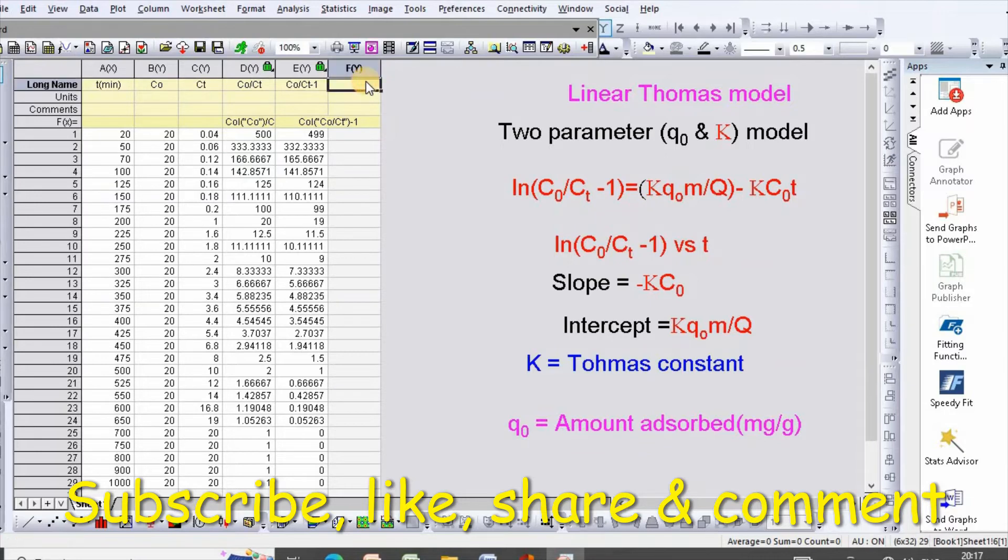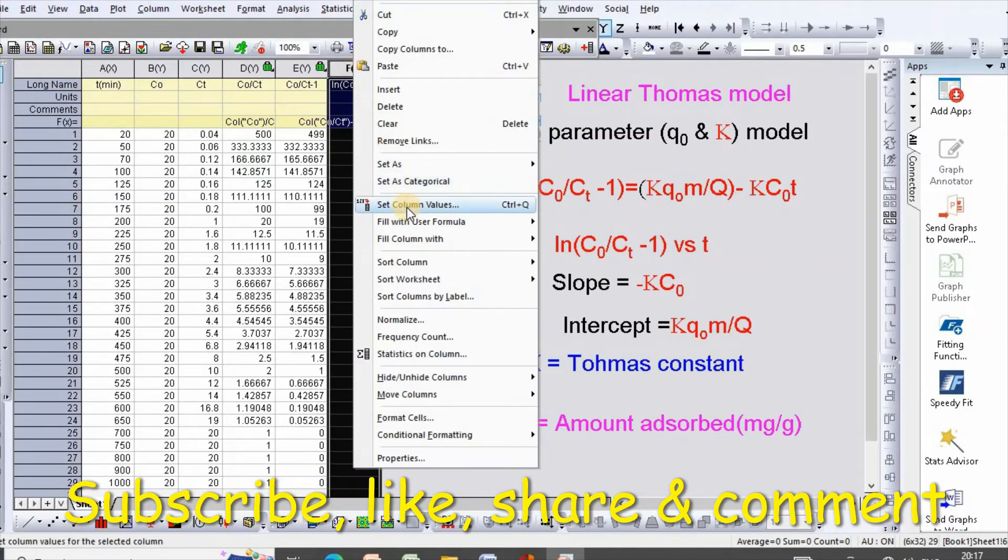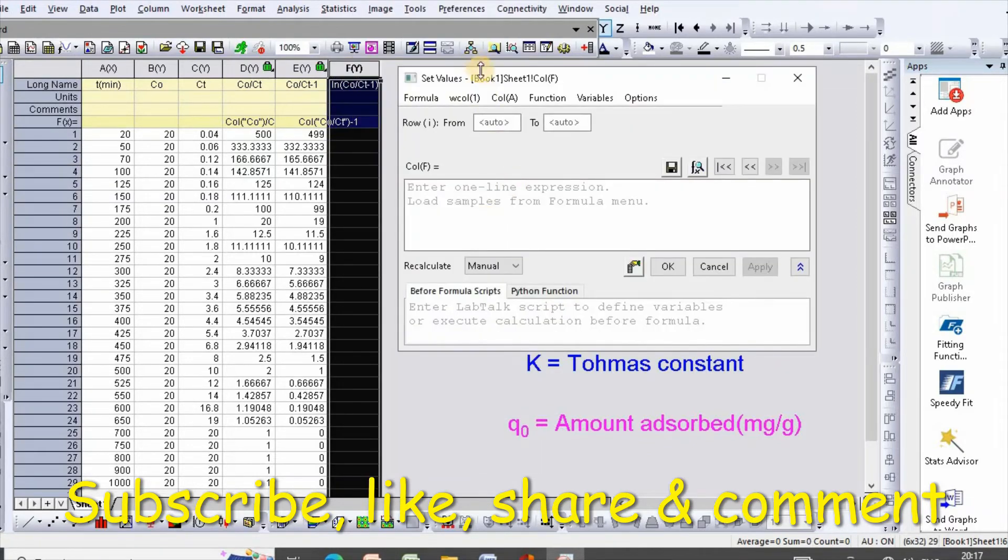Just ln(C0/Ct - 1). Select this and right-click, set column values which is equal to...